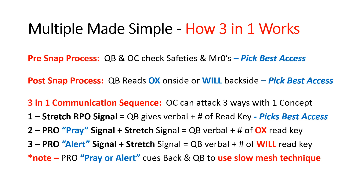Next, we want to show you how we can make multiple simple and how this 3-in-1 works. The pre-snap process: quarterback and OC are always checking every play for safeties and then down to the Mr. Zeros, and we can pick best access. Post-snap then, quarterback reads either the OC if it's onside best access, or the Will backside.